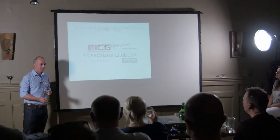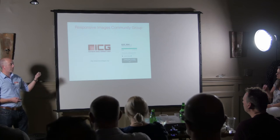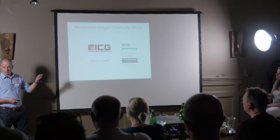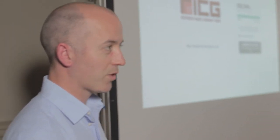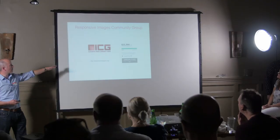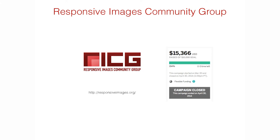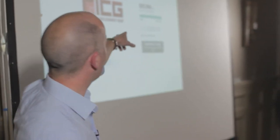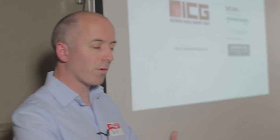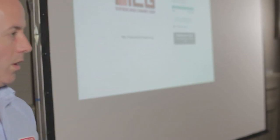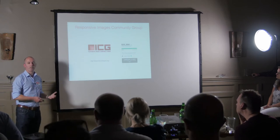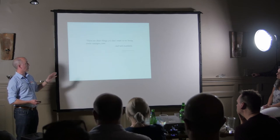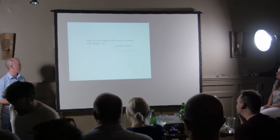As of last year we have a new element called the picture element, and the image element has two new attributes: srcset and sizes. The story of how this came about is amazing. It was crowdfunded on Indiegogo — some interested parties wanted to see change and needed to fund their time. They got around 250 people who ultimately sent in £15K so industry experts could work with browser manufacturers to promote a solution that everybody was at least willing to go along with.